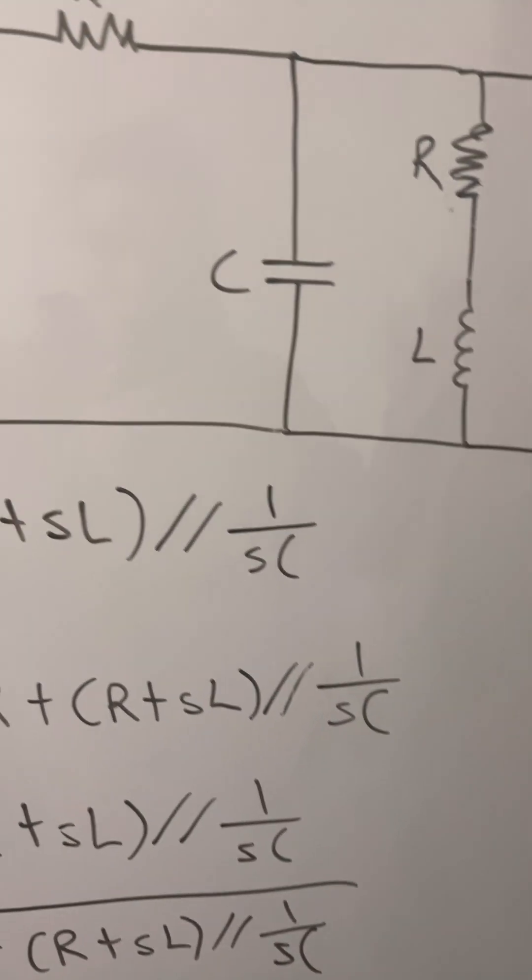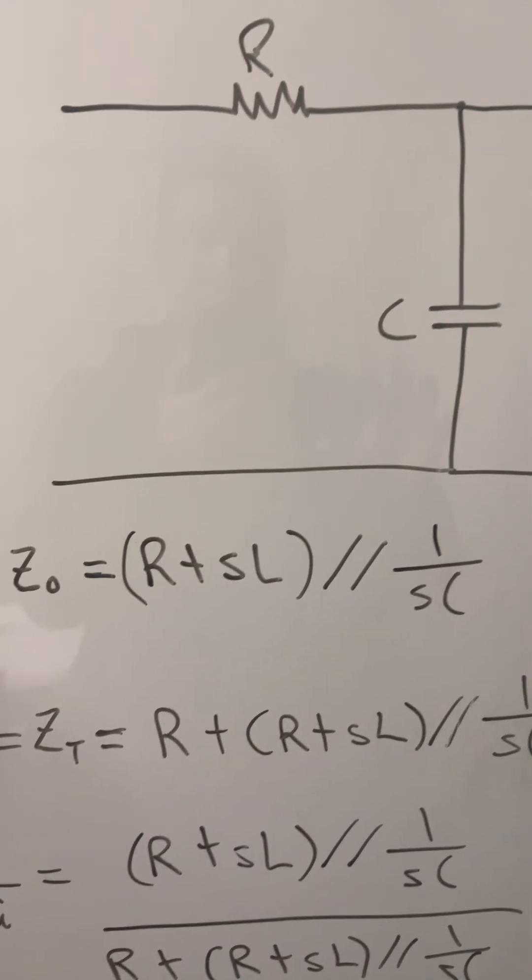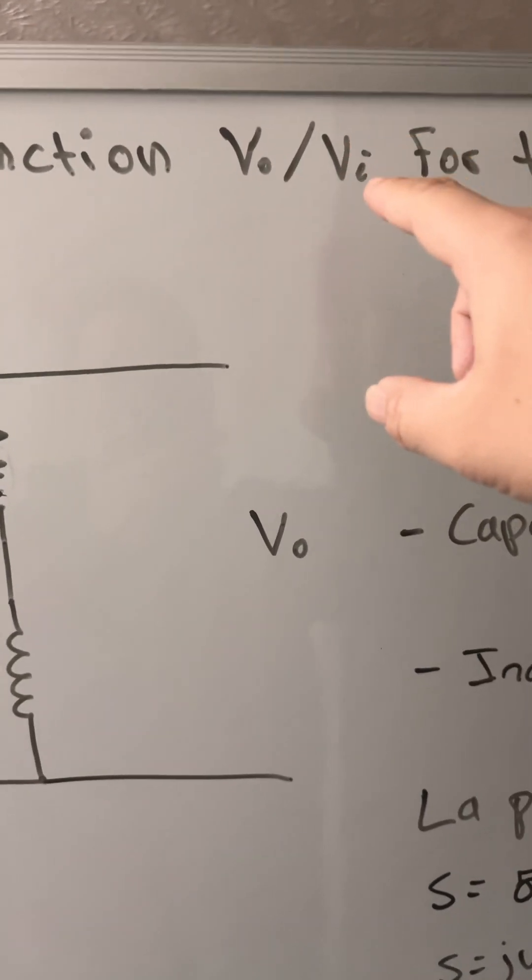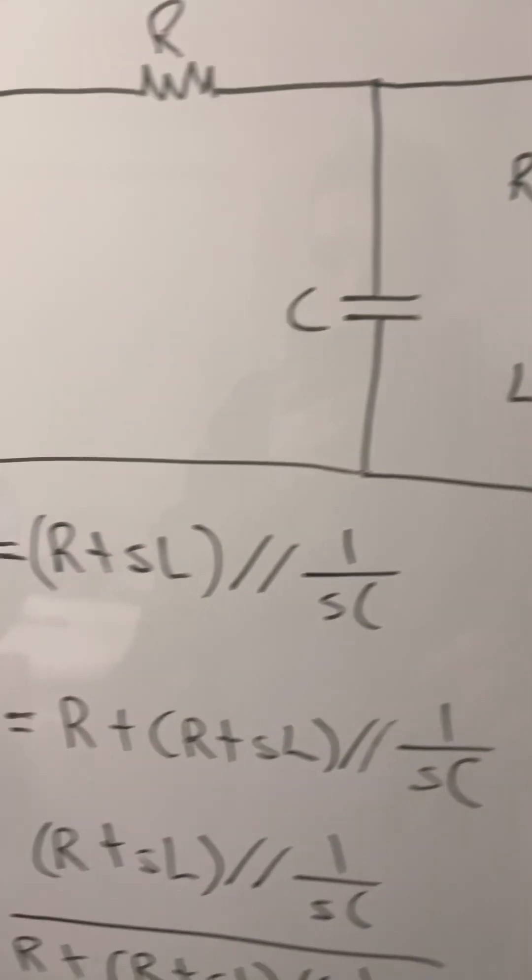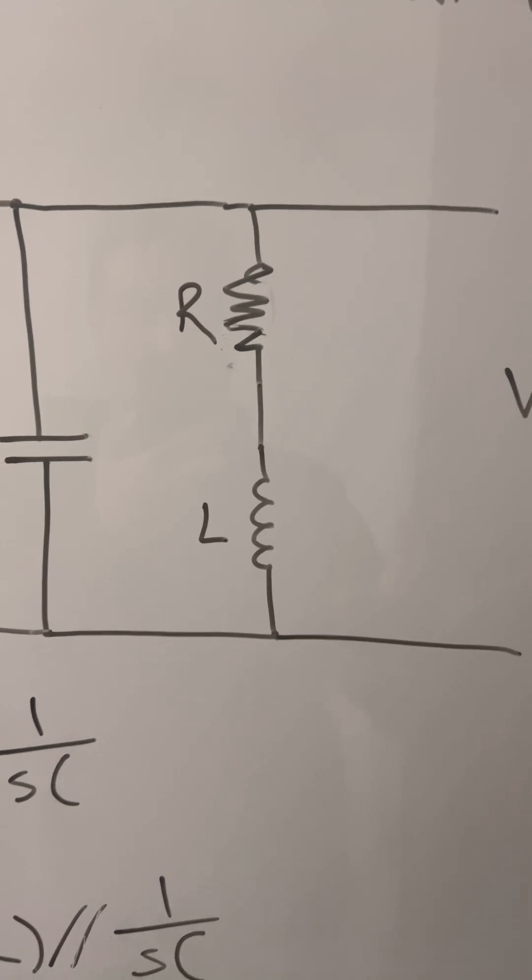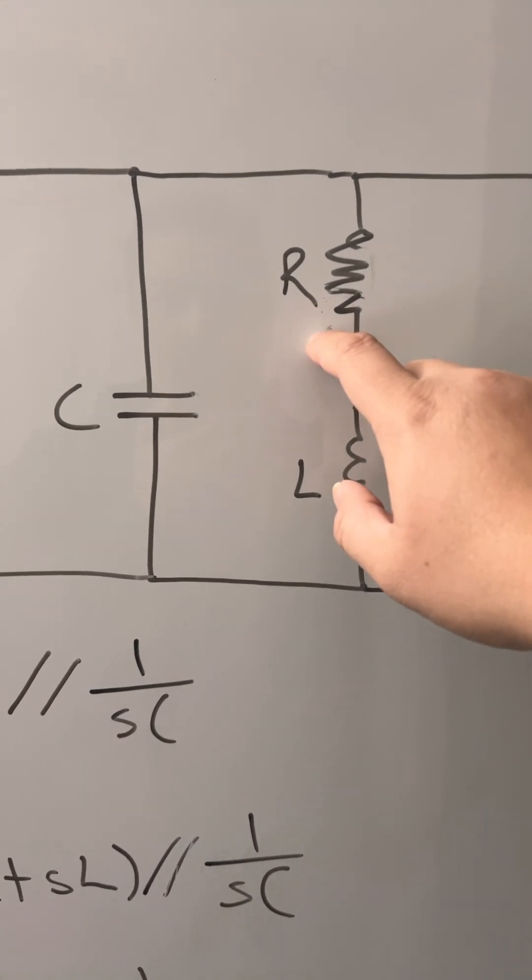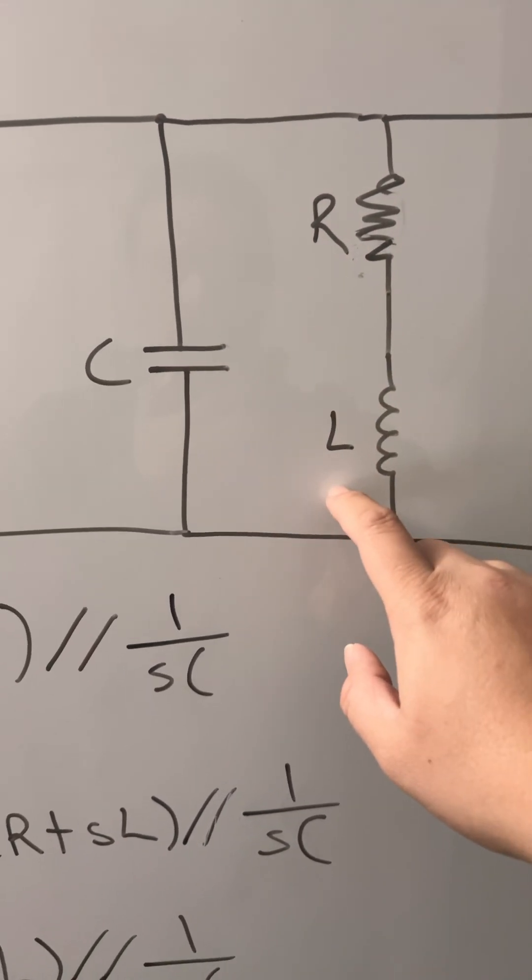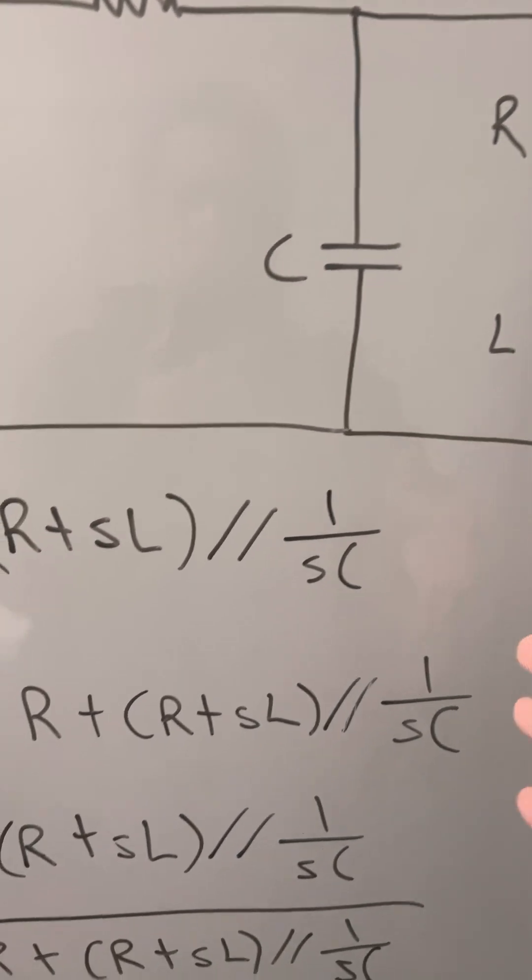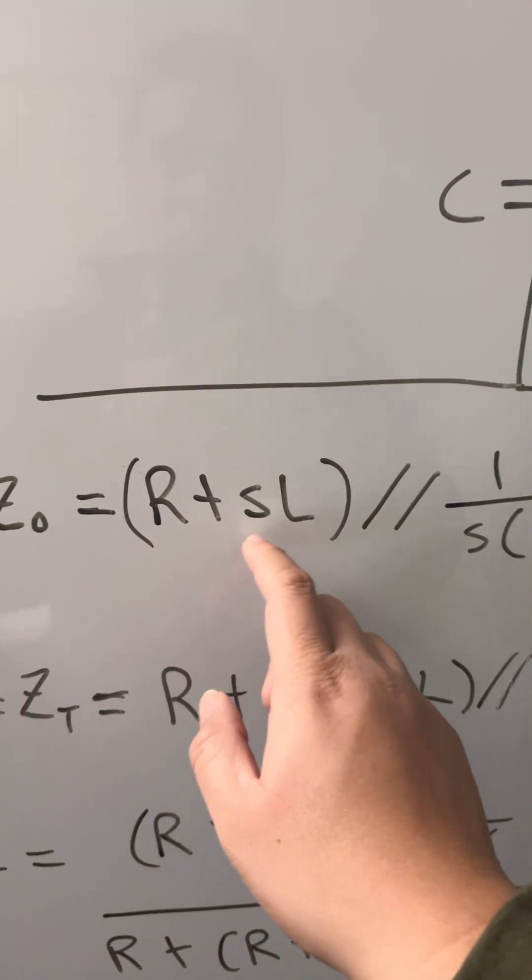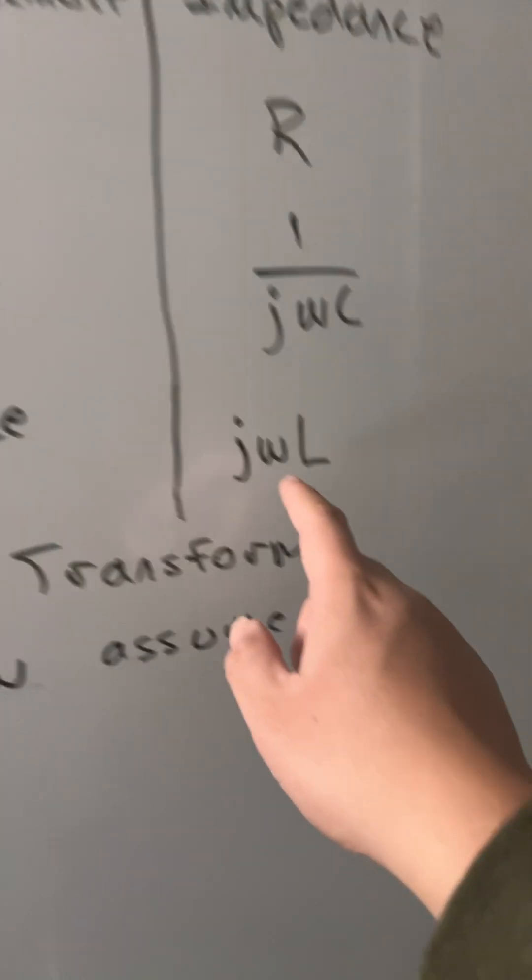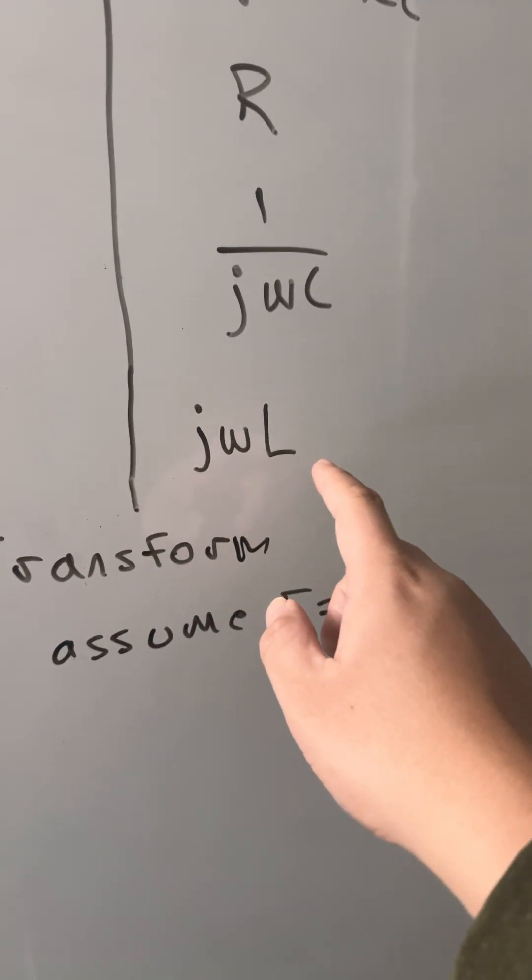So now we're going to calculate for the V output divided by the V input. So first of all, we're going to start on the right side. So we have the R plus the L, that's in series. So you will have your R plus SL. Remember, S equals j omega, j omega times L.